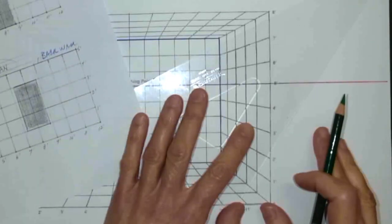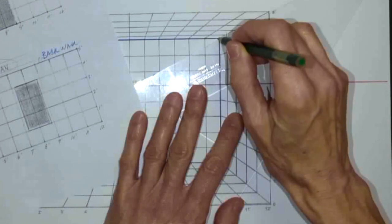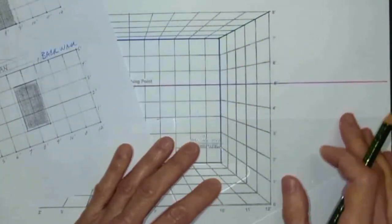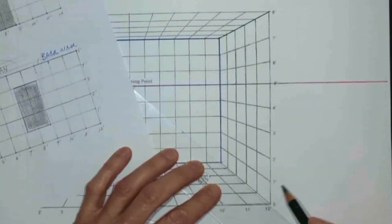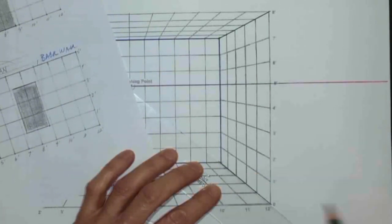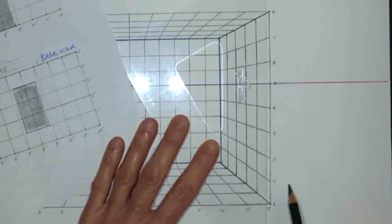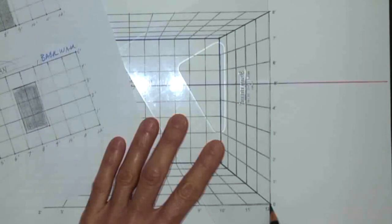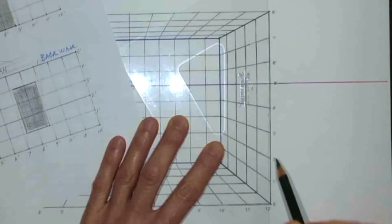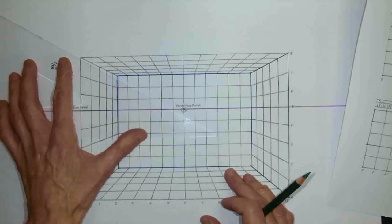This is our right wall. I don't know if you can see these colors, but I'm using green here to show this is the right wall. And this is the left wall.